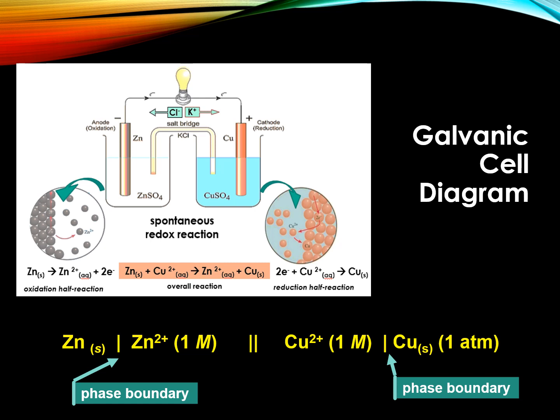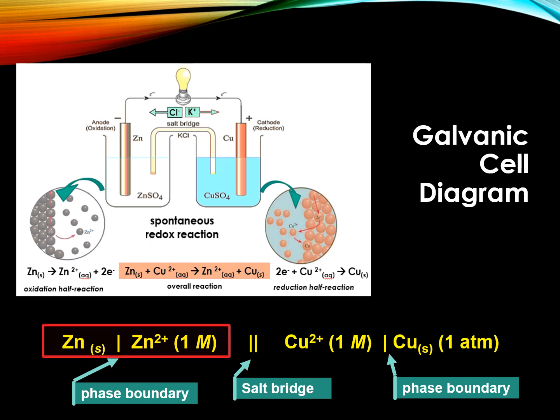Representing the salt bridge is a double vertical line, which is placed between the two processes. Take note, the components in the anode is written first, while the components in the cathode is written after the double lines.